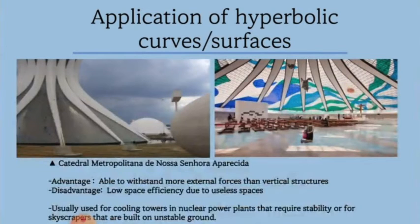The following image is the Brasilia Cathedral where you can easily spot hyperbolic curves and hyperbolic surfaces. The advantage of these structures is that they can withstand more external forces than vertical structures. On the other hand, they have so many useless spaces that they are less efficient.